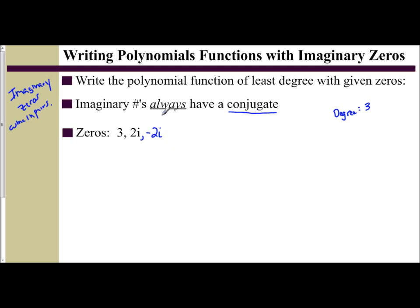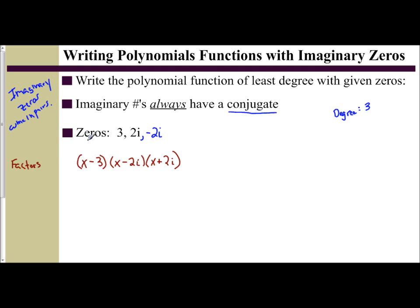Let's set up our factors as we've done before. We have x minus 3, x minus 2i, and x plus 2i. We set up the factors from the zeros, and now we're going to distribute them out to find the polynomial function.